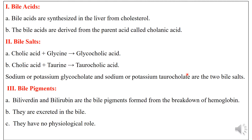The third component of bile is bile pigments. The bile pigments are biliverdin and bilirubin, and these are formed from the breakdown of hemoglobin. They are excreted in bile and have no physiological role; however, they have some clinical significance.